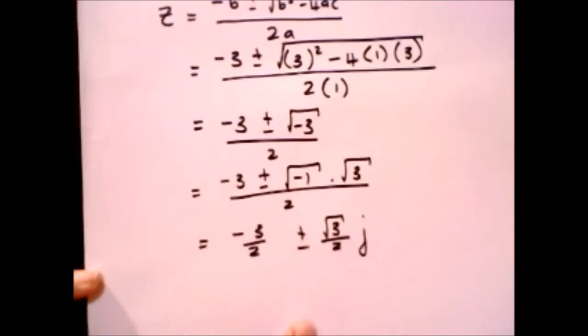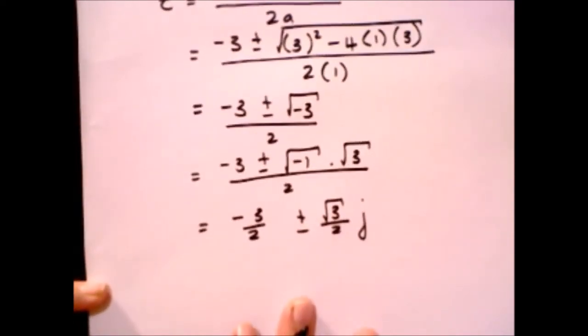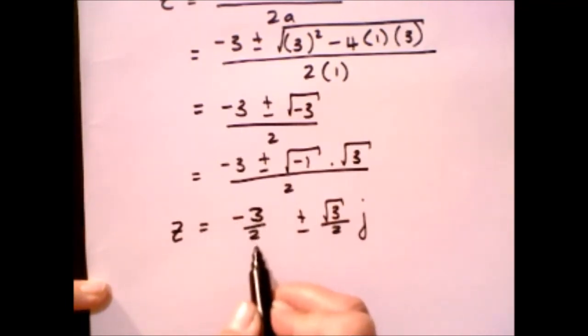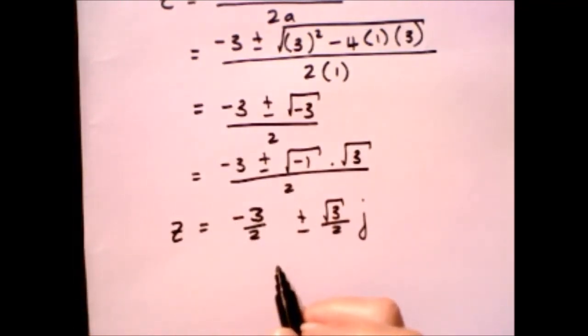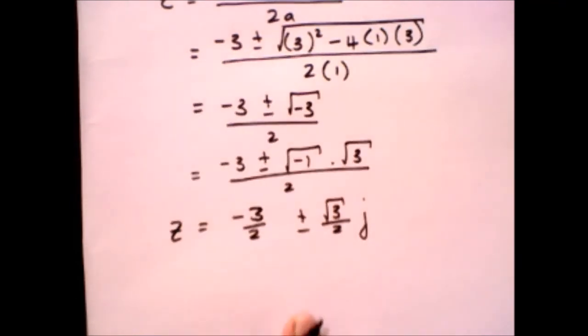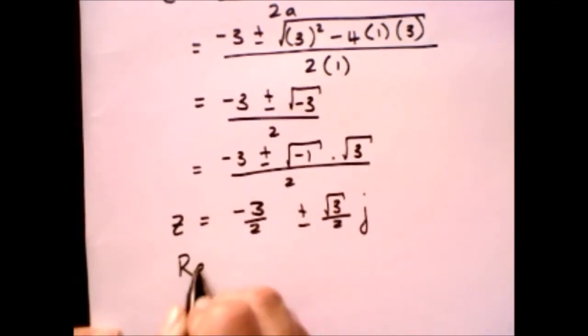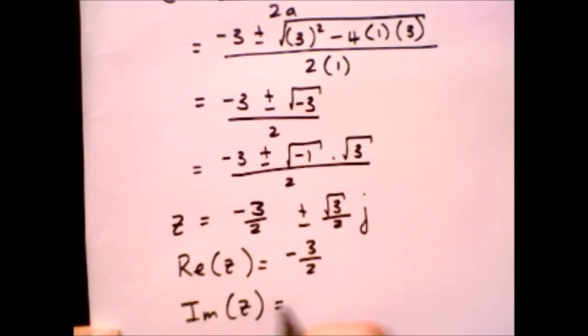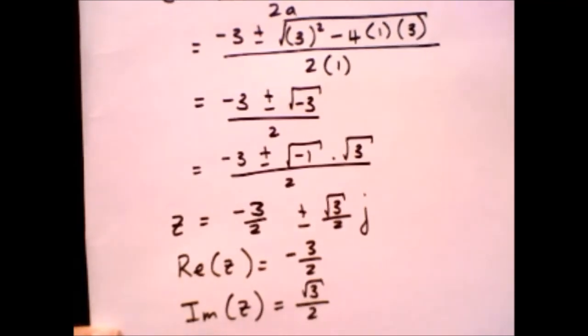So in this case, your solution is going to be z equals minus 3 over 2 plus minus the square root of 3 over 2 times j. And the real part of z is minus 3 over 2, and the imaginary part of z is going to be square root of 3 over 2.